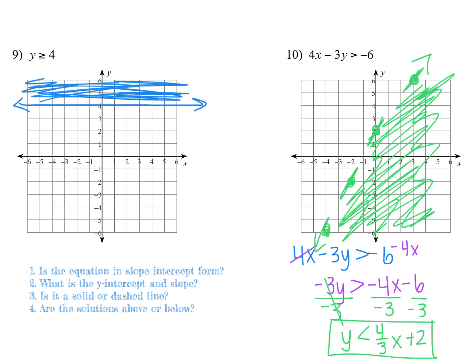For example nine: y ≥ 4 has no x-term, so it doesn't cross the x-axis. It's greater than or equal to, so draw a solid line and shade above. For example ten: 4x - 3y > -6. Subtract 4x, then divide by negative three — remember dividing by a negative flips the inequality sign. This gives y < (4/3)x + 2. The y-intercept is two, rise four run three. It should be a dashed line, and shade below because the sign flipped.